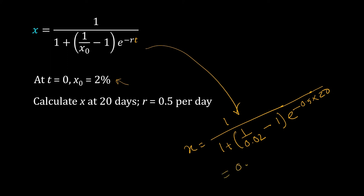You get 0.9977, which is nothing but 99.77%. That means if you start with 2% of the population infected and the rate constant is 0.5 per day, then on the 20th day you will have 99.77% of the population infected.